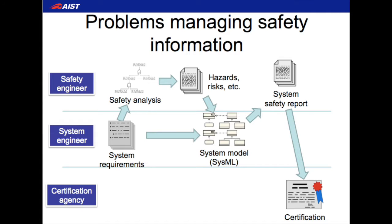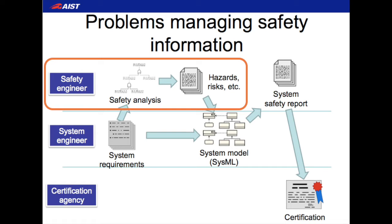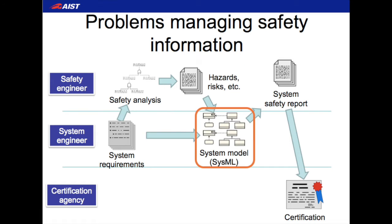This slide shows an overview of the flow of safety information during the development of a safety critical system. In the middle we have a system engineer who is developing a system and is responsible for designing it, producing the requirements, and so on. Based on the requirements that he produces, a safety expert is going to produce a safety analysis, which generates a list of hazards and risks involved in using the system. This is then combined into a system model which takes into account these hazards and risks to produce safety features and make the system safe.